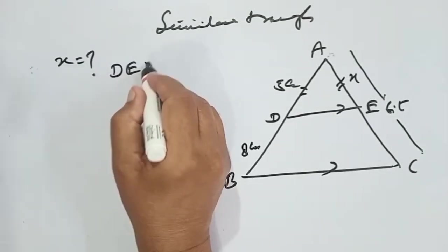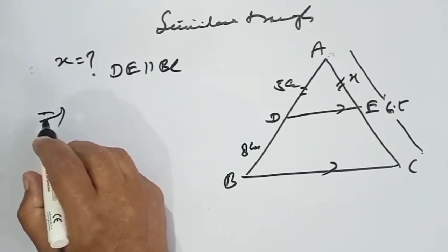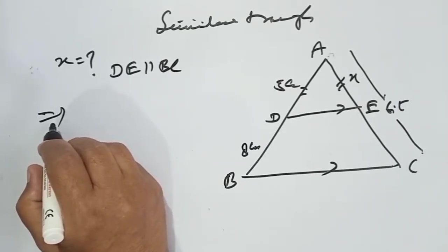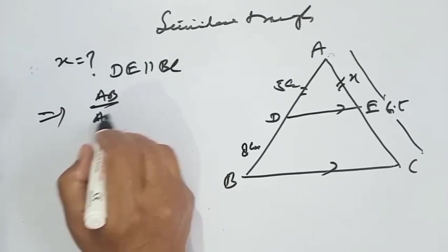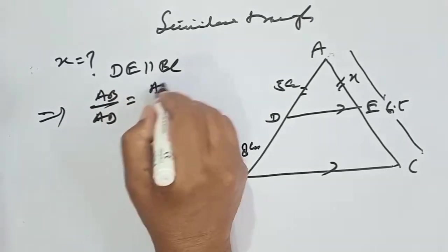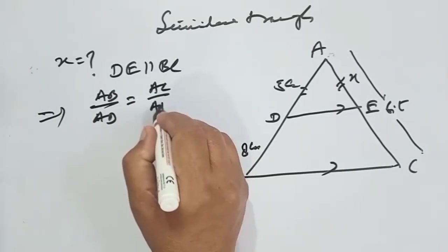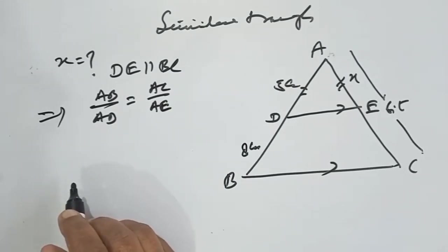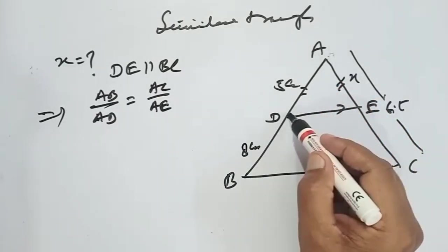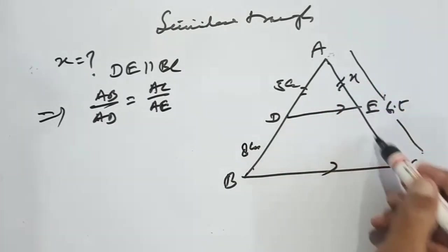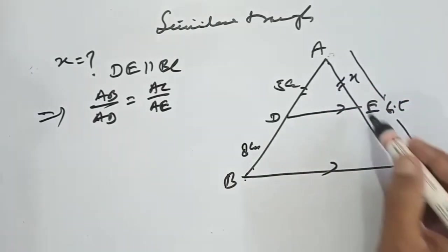DE is parallel to BC. AB upon AD is equal to AC upon AE. In fact, this theorem has four options: one is AD upon DB equals AE upon EC, the second one is AB upon AD equals AC upon AE, next one is AB upon DB equals AC upon EC.